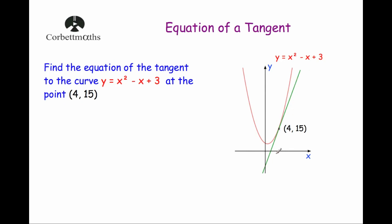To do that, what we need to do first of all is to work out the gradient of the curve at the point (4, 15). To find the gradient of a curve at a particular point, we first need to work out the gradient function, dy by dx, and we're going to find that by differentiation. Differentiating x squared gives us 2x, differentiating minus x gives minus 1, and differentiating plus 3 gives 0. So the gradient function is dy by dx equals 2x minus 1.